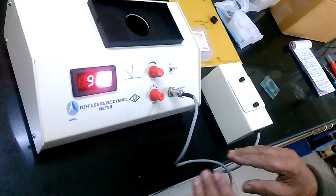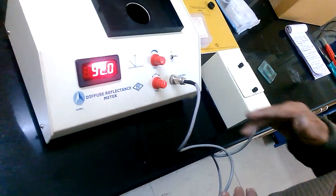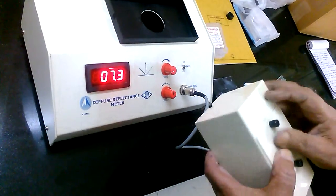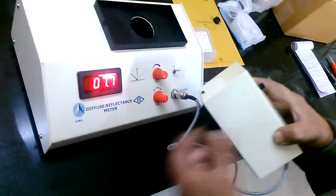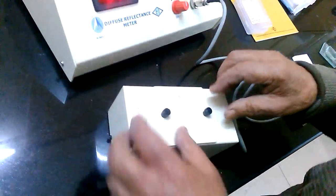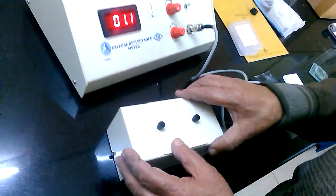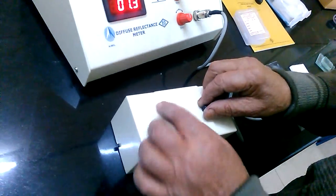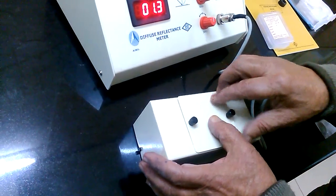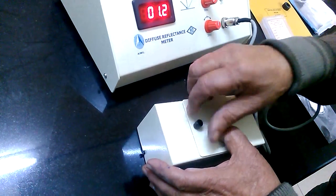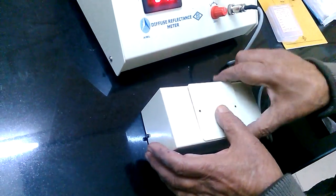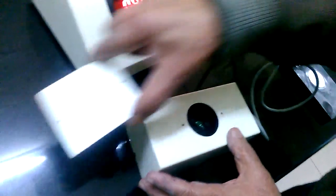In case you want to change the brightness of any powder, you have to replace the filter from green to blue filter. I will show you how you can change the filter from green to blue filter. Remove this top plate on the measuring head. Unscrew these two thumb screws. And remove that plate.